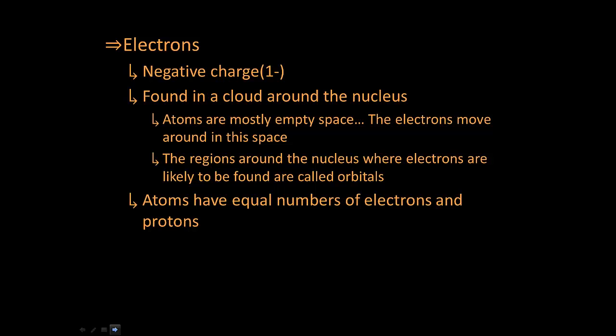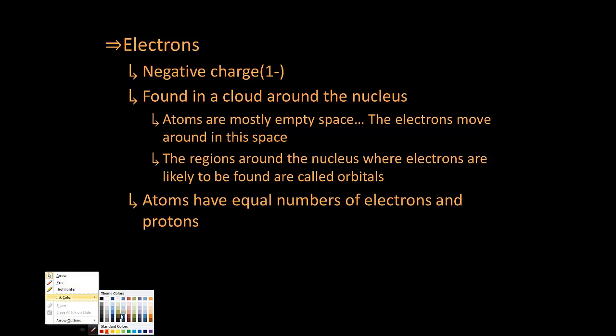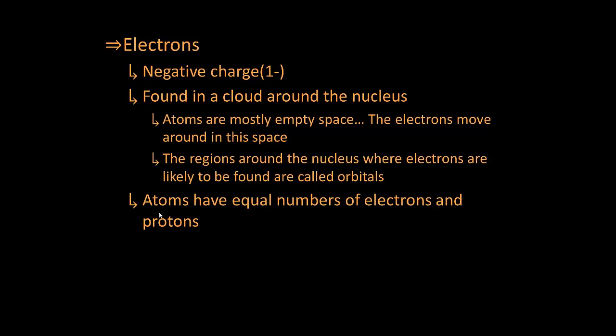Atoms have equal numbers of electrons and protons. This is important. The fact that atoms have equal numbers of electrons and protons means that the atom is neutral because protons and electrons are going to exactly balance each other and cancel each other's charge.